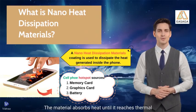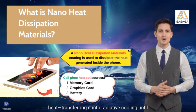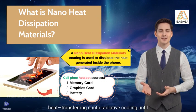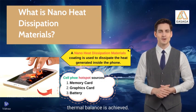The material absorbs heat until it reaches thermal conductivity equilibrium, then begins to dissipate heat, transferring it into radiative cooling until thermal balance is achieved.